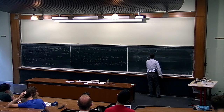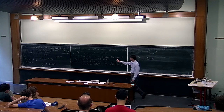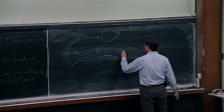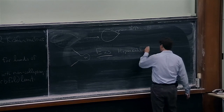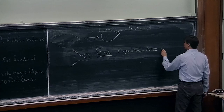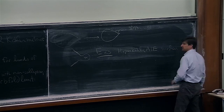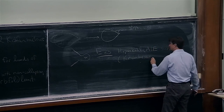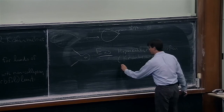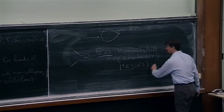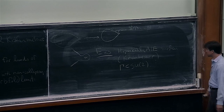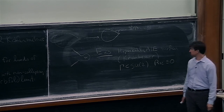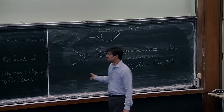Now I'll go back to scalar flat Kähler ALE metrics. There's a very important family of examples. The picture was completed by Kronheimer. All of these have the subgroup lying in SU(2), the group at infinity. Moreover, they are Ricci flat — these are Kähler-Einstein. So these are a very important class of Ricci flat ALE metrics.